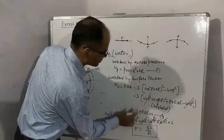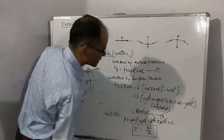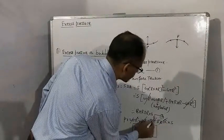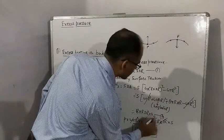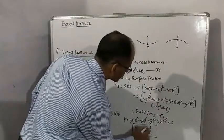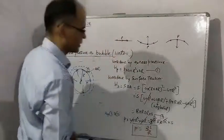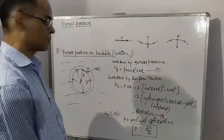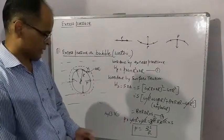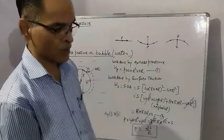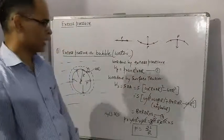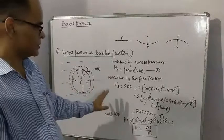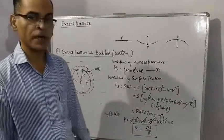So derivation is again very same, here you would write S ΔA, and again it becomes 2S by r. The excess pressure on bubble in water is exactly same as excess pressure on drop. Derivations are exactly same students, there should not be any confusion. I hope you are understanding students.